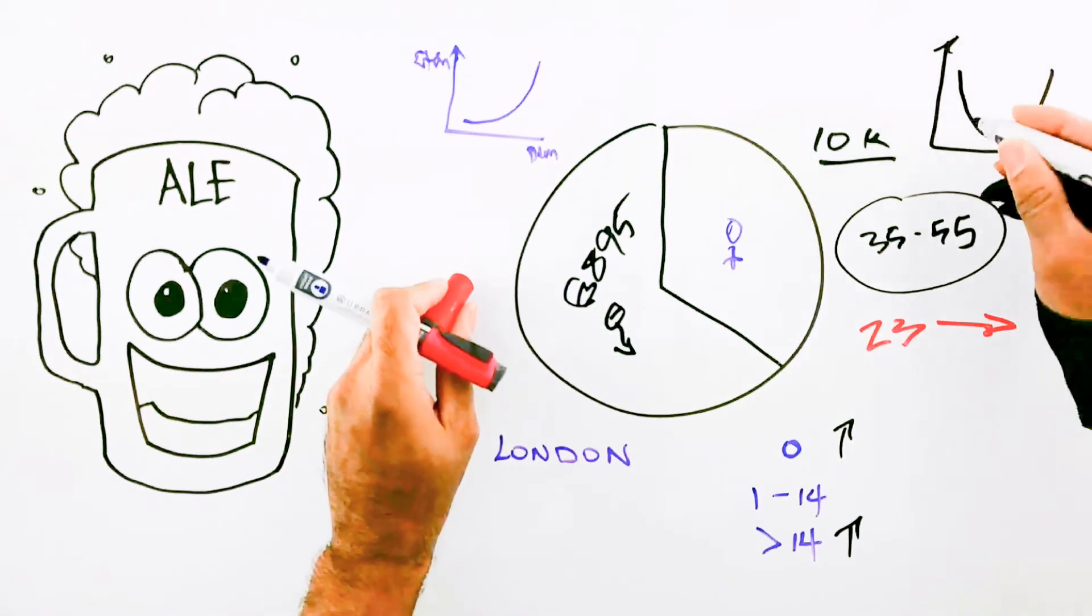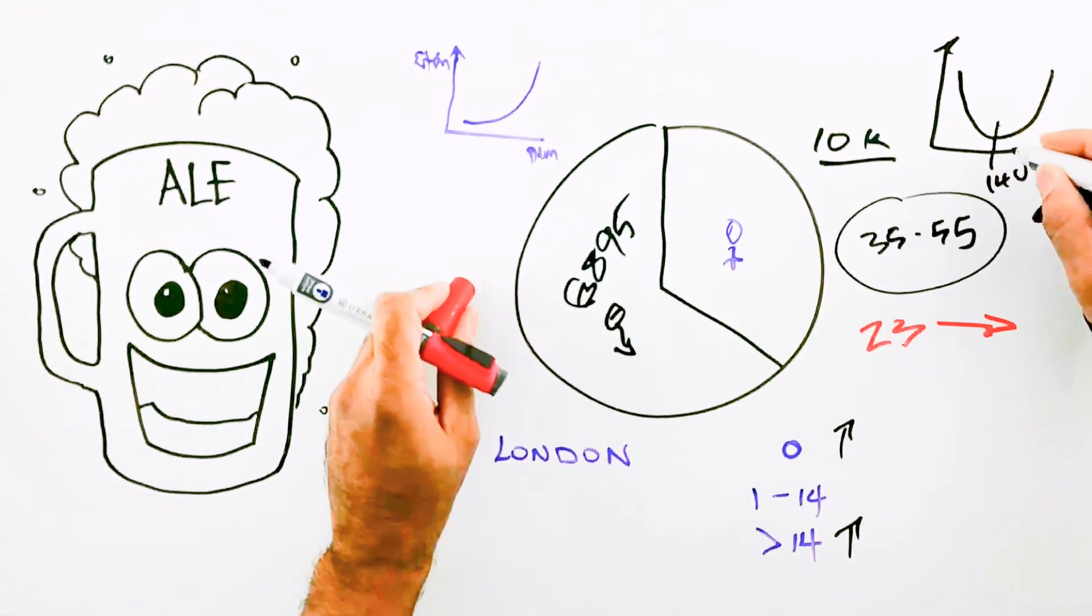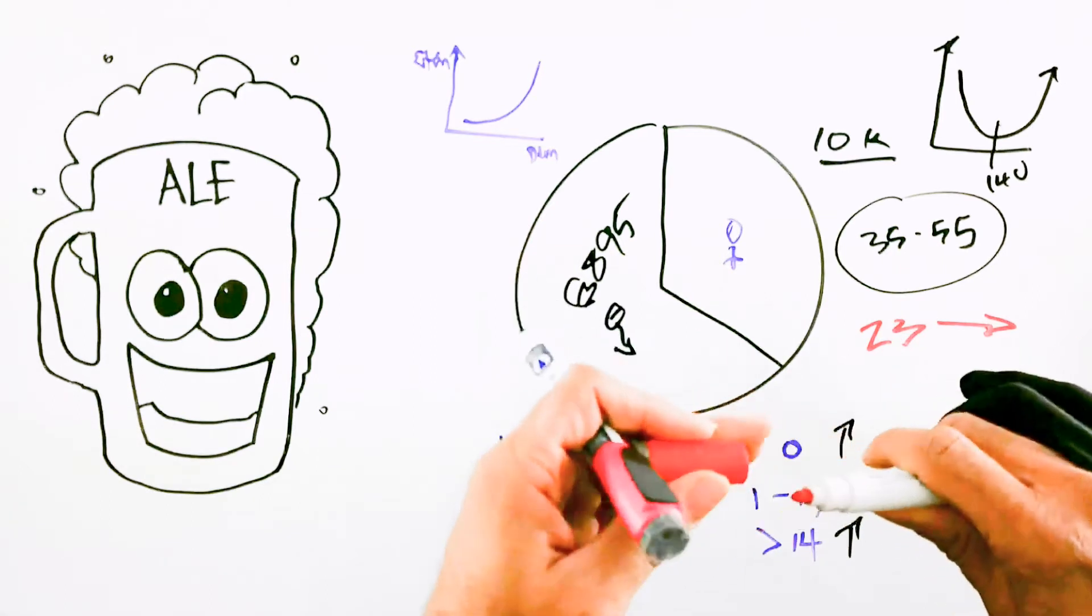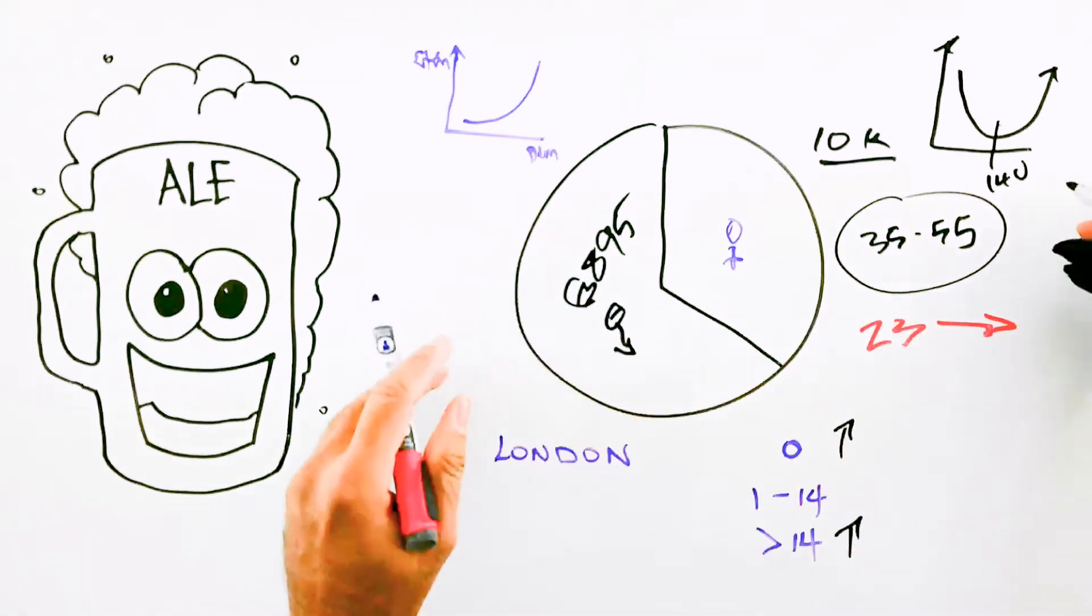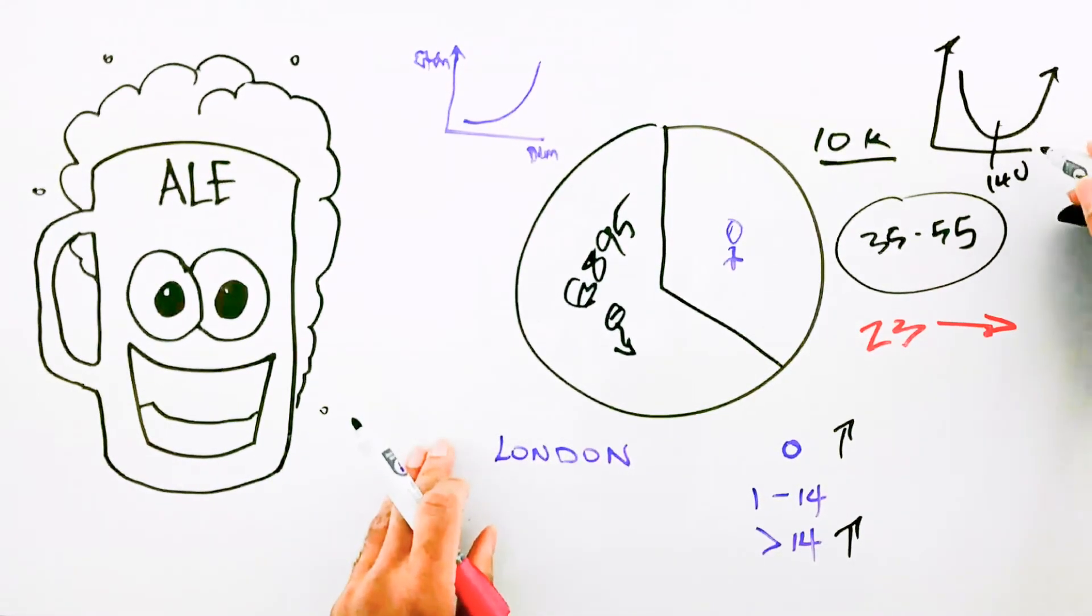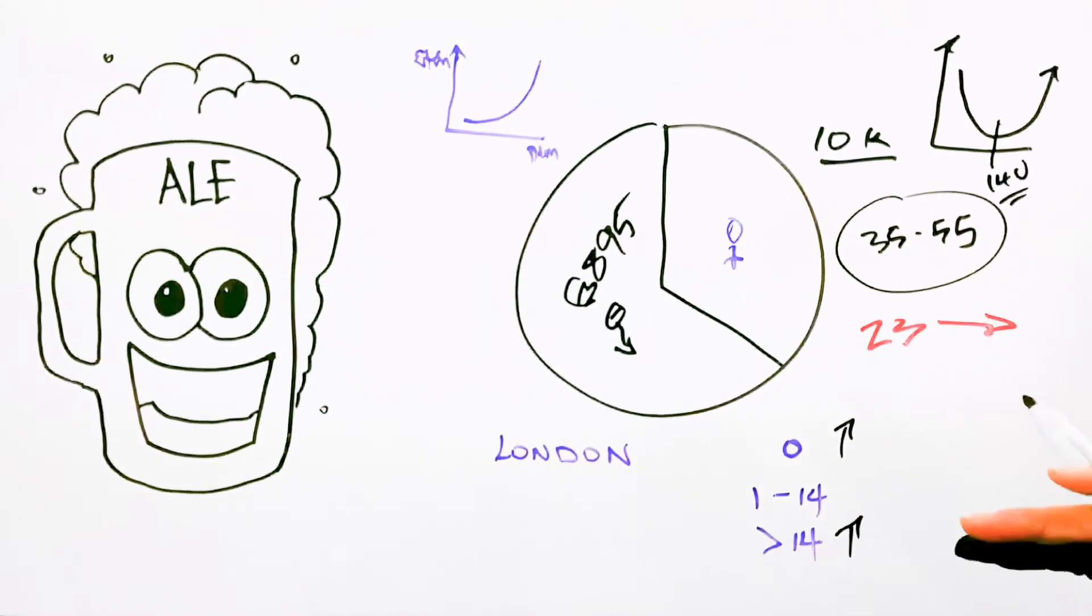So in other words, the more you drink up to a certain point—this threshold here, which is 14 units—the less likelihood it is that you develop dementia. And when you go above this threshold, then obviously a lot of bad things happen, including death, accidents, dismemberment, losing a job, etc. But in terms of dementia, the rate increases astronomically as you go up with alcohol.